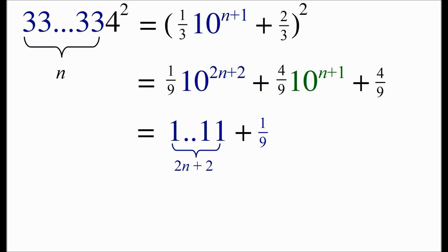So the blue term turns out to be a string of 1s, 2n plus 2 of them, plus 1 ninth. We can do the same thing for the green term. When we take 4 ninths of a power of 10, we're going to end up with that many number of 4s, plus we're going to end up with 4 ninths. And finally, we just copy over the 4 ninths term.